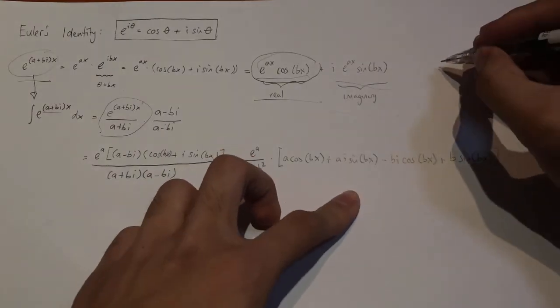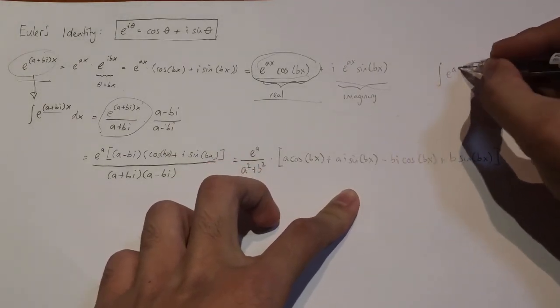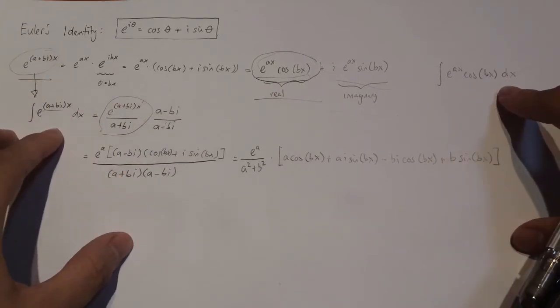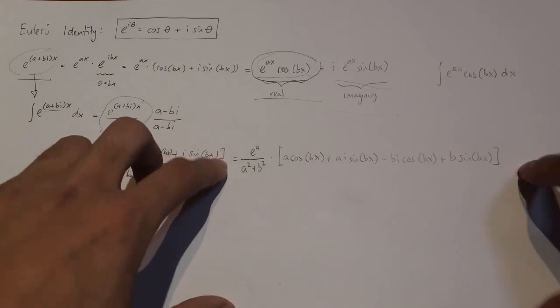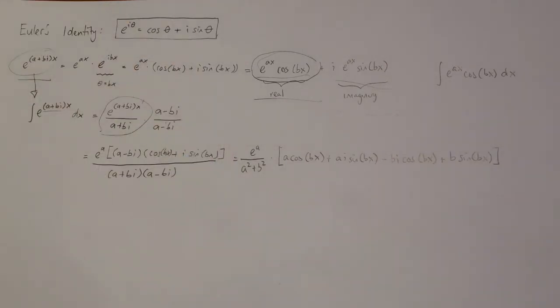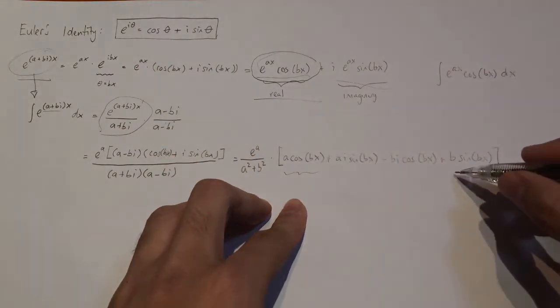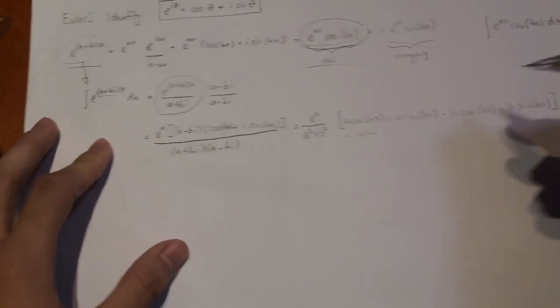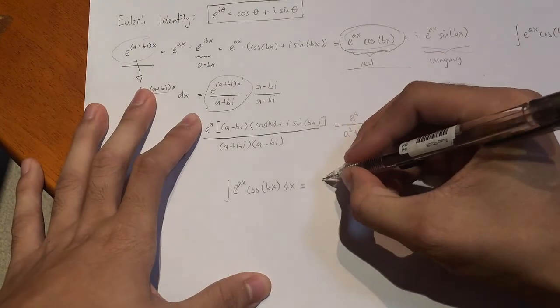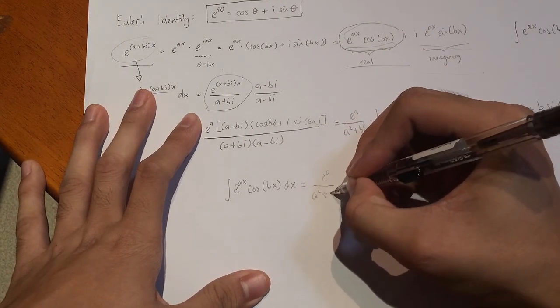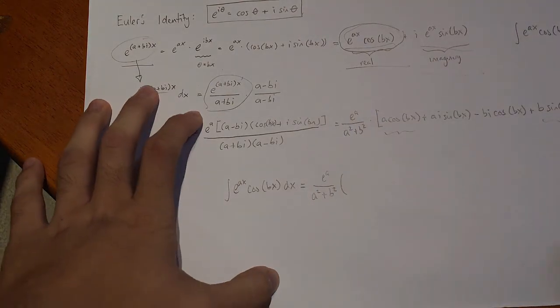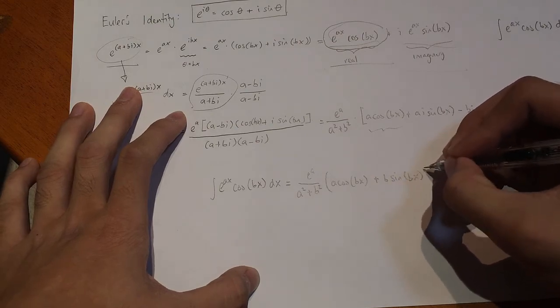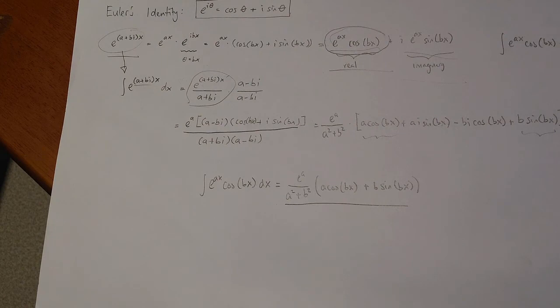And finally, since the integral that we're interested in is actually the integral of e to the power of ax times cos of bx dx, which is just the real part of the integral we evaluated. When we have the answer, we're only going to take the real part of the answer. And the real part of the answer is the bit that does not have the imaginary unit or the i. So this part will be a real part. And so will this part because it doesn't have the imaginary unit. And so we can work out the answer to this integral now, which would just equal to e to the power of ax divided by a squared plus b squared, multiplied by a cos bx plus b sine bx. And there you have it. That is your answer.